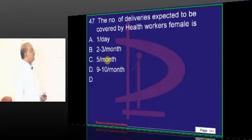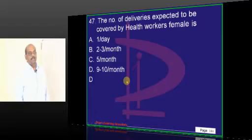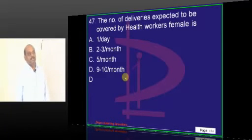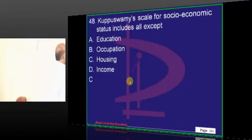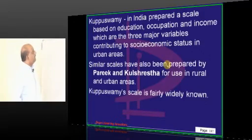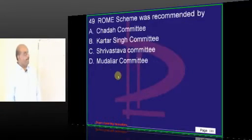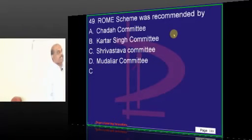Health worker female — how many deliveries is she supposed to do? Nine to ten per month. Kuppuswami scale does not include housing but includes income, occupation, and education. Parikh and Kulakshetra are different scales you need to read. ROME was introduced by which committee? The Srivastava committee — there are different committees you need to remember.